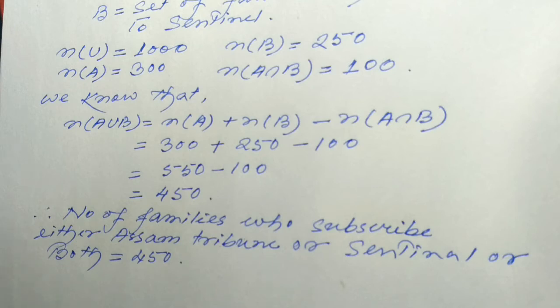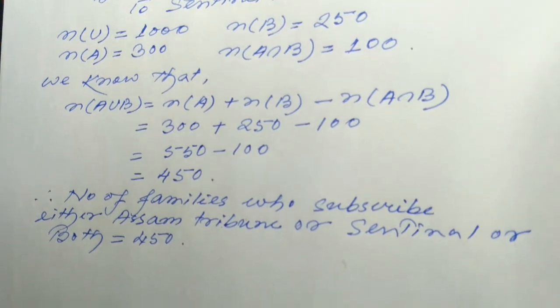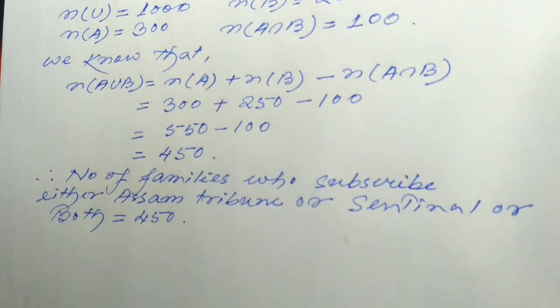So the number of families who do not subscribe to any of the newspapers — our total family count is 1000, and 450 families subscribe to at least one paper, so 1000 minus 450 gives us 550 families who do not subscribe to any newspaper.